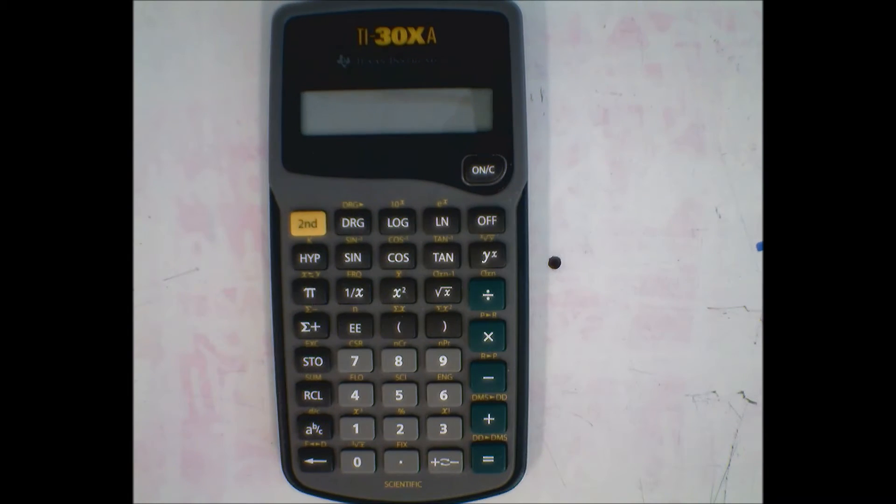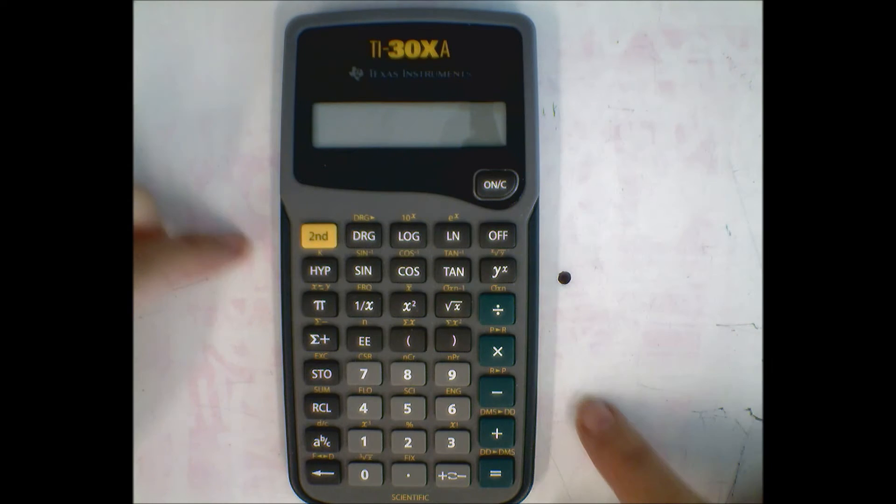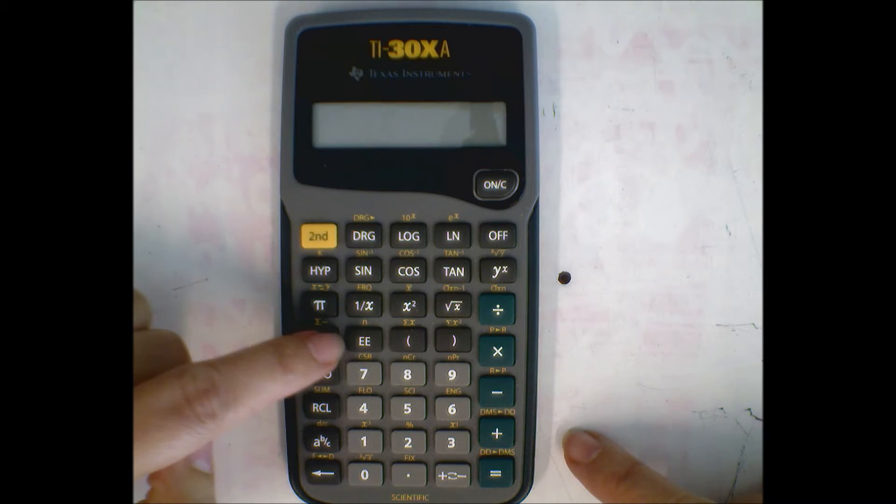On this particular calculator, and this is one of my favorites, that button right there is your scientific notation button. It's the EE button, right above the number seven.